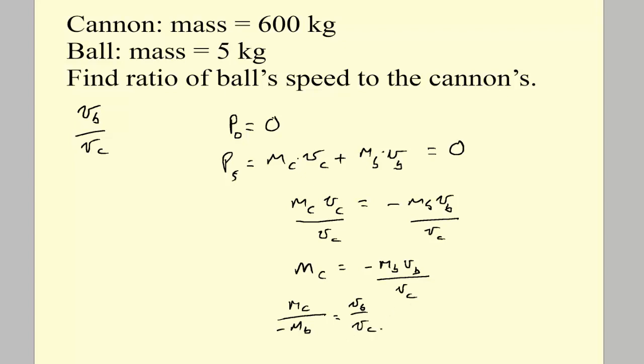And since we're only interested in the ratio of the speeds, we don't have to worry about the negative sign because that's just a direction indicator anyway. So you can just ignore that. So it turns out that the ratio of the velocity of the ball to the velocity of the cannon is the mass of the cannon divided by the mass of the ball. So if we toss in our numbers, we've got 600 over 5 for the ratio of the mass and that's equal to 120. And that's the ratio of the velocity of the ball to the velocity of the cannon. In other words, the velocity of the ball will be 120 times the velocity of the cannon.